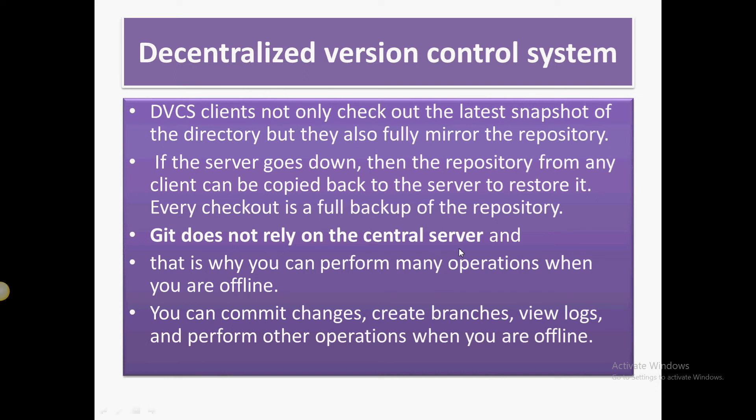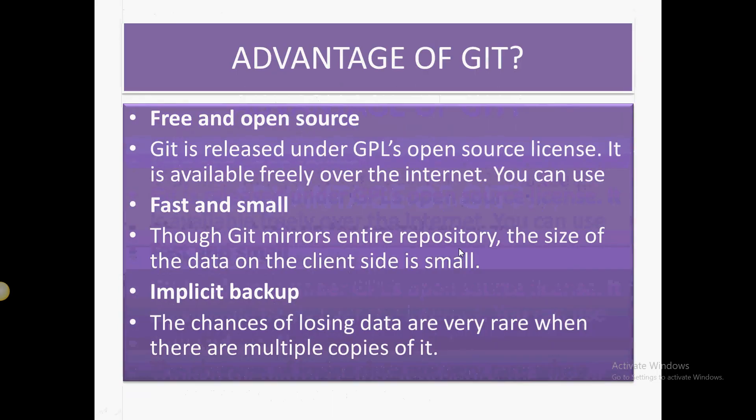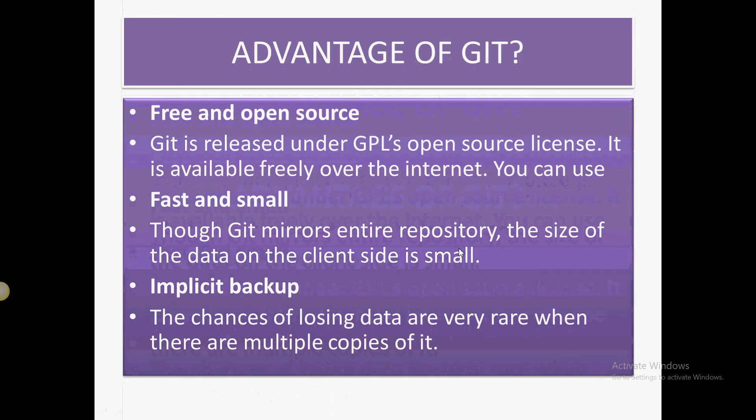Git does not rely on a central server, and that is why you can perform many operations when offline — you can create branches, view logs, and perform other operations. This is also why its speed is very high, because it is a decentralized version control system.